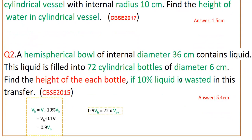In this question, a hemispherical bowl of internal diameter is given, and if 10 percent of the liquid is wasted, the volume available equals the volume of the hemisphere minus 10 percent of that volume, which is 0.9 × V_H. You apply 0.9 × V_H because 10 percent of the liquid is wasted. This equals 72 cylindrical bottles — so 72 × volume of a cylindrical bottle equals 0.9 × V_H, from which you can find the height of each bottle.